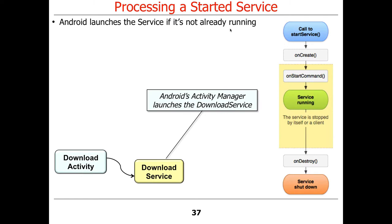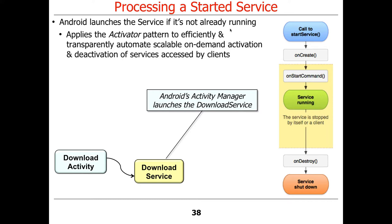Let's talk about how you process a service that's been started. Under the hood, the Android service framework — implemented by the Android Activity Manager service, which is an internal system service — goes ahead and starts the service if it's not already running. This uses the activator pattern, which efficiently and transparently automates scalable on-demand activation and deactivation of services, a fancy way of saying it creates things on-demand so you don't have to have them up and running until they're used, meaning resources are used more economically.